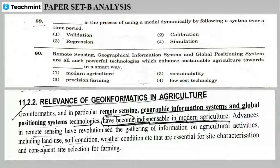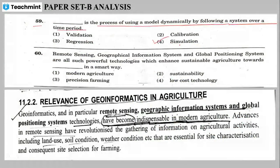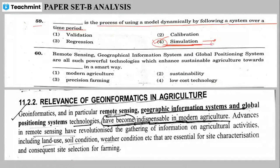Blank is the process of using a model dynamically by following the system over a time period. The correct answer is simulation. Simulation means duplication, prediction of future conditions in advance.